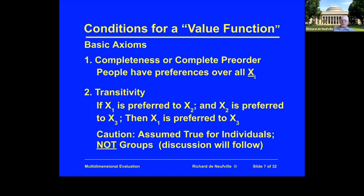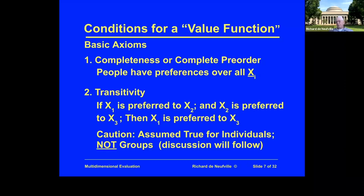This is assumed true for individuals, and it is true — though depending on how you phrase it, there are various ways you can lead people to think differently, depending on context. For example, if you're a strawberry ice cream fan who prefers it to chocolate and really dislikes marshmallow ice cream, it's presumed you also prefer strawberry to marshmallow. The key point is that this fairly obvious logic — a preferred to b, b preferred to c, therefore a preferred to c — is not necessarily true for groups.